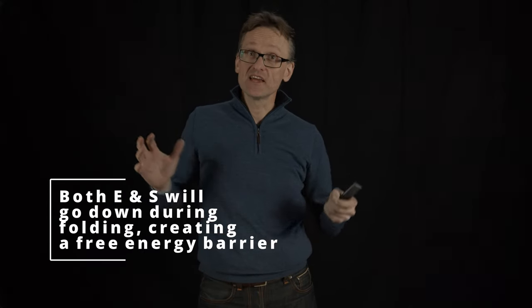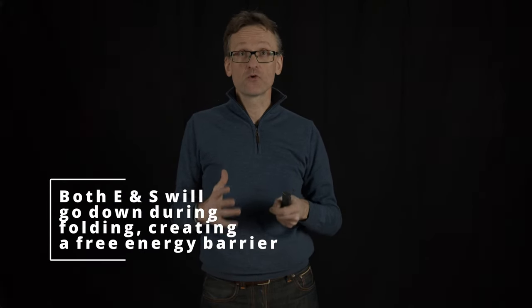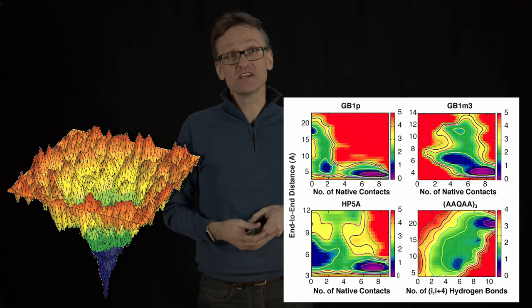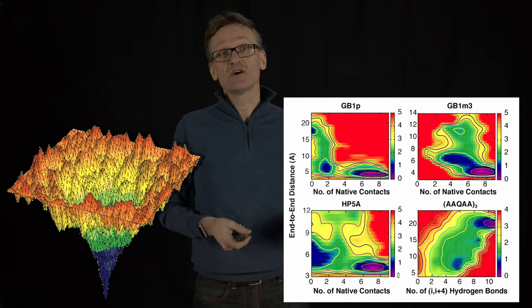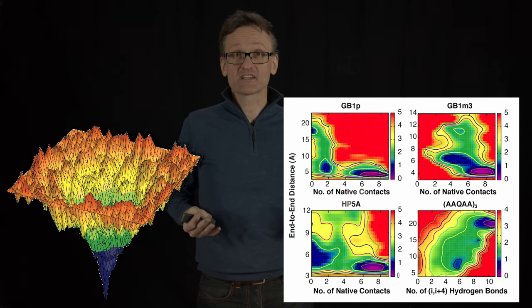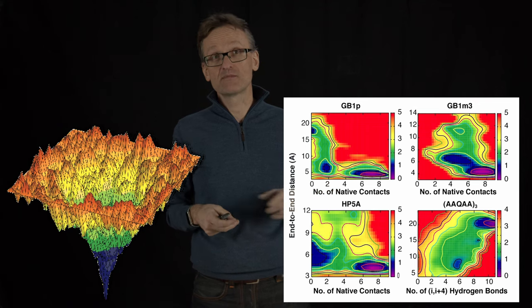We already argued that as the native state forms, we're going to get more and more contacts that contribute to the energy, and you could think of that moving down in an energy landscape. But we don't have to be that abstract. In particular, with simulations we can plot this for small proteins. What we see here, on the x-axis, you have the number of native contacts, and the color represents the free energy landscapes.